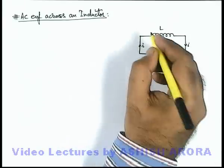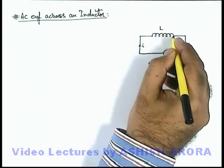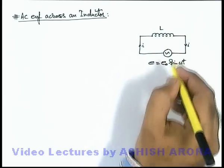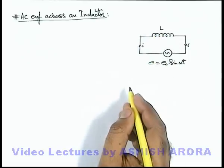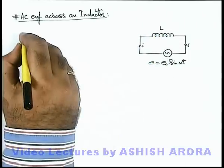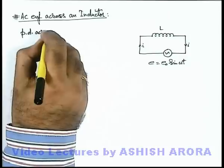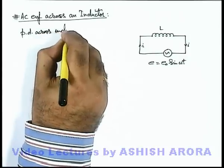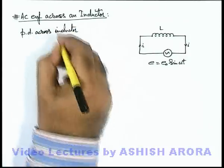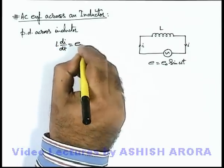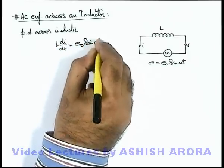We can always write that the potential difference which is induced in the inductor due to time varying current will always be equal to this AC EMF because both of these are connected in parallel. So we can directly write the potential difference across the inductor, which is always L di/dt, will always be equal to the AC EMF which is e₀ sin(ωt).